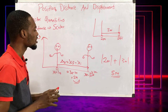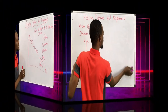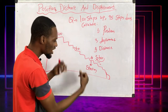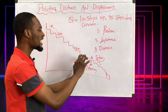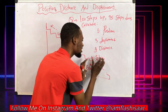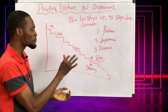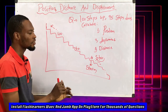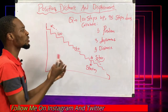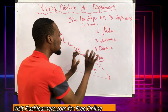Let me give another illustration to make these things easier to understand. This is a staircase with many stairs. Starting from the 10th step — that's my initial position — I take 100 steps up, then 95 steps down. We need to calculate position, displacement, and distance.